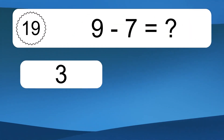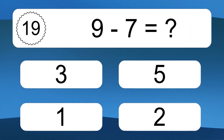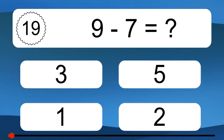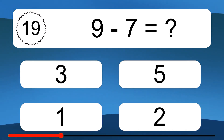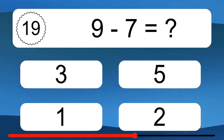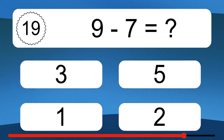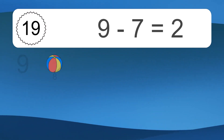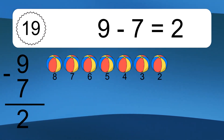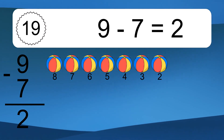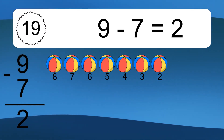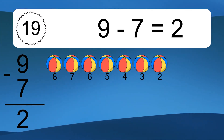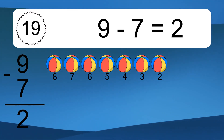9 minus 7 equals what? 9 minus 7 equals 2. Let's count it: 8, 7, 6, 5, 4, 3, 2.